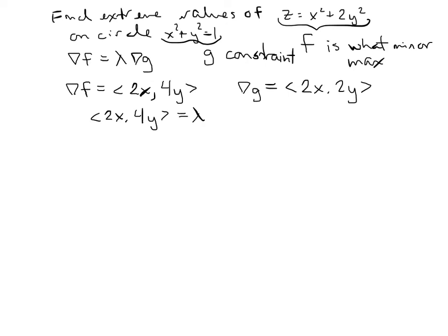So we want to set the gradient of f, 2x, 4y, equal to lambda, some constraint, times the gradient of g, which was 2x, 2y.